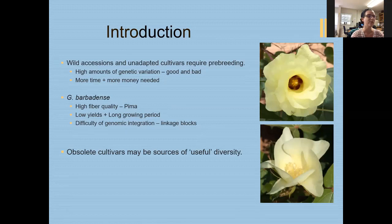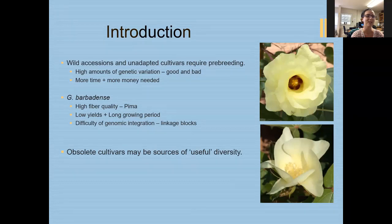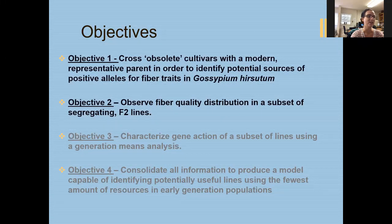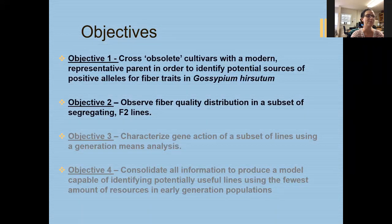Because of those difficulties using wild accessions or Barbadense cultivars, we look towards obsolete cultivars that can be found within the USDA gene banks. Those can be integrated more easily as a source of useful diversity, which is what my project focuses on. I had four main objectives, two of which I will focus on today. The first was to cross these obsolete cultivars with our modern representative parent to identify potential sources of positive alleles for fiber traits in G. hirsutum. My second objective is to observe fiber quality distributions in a subset of my segregating F2 lines.